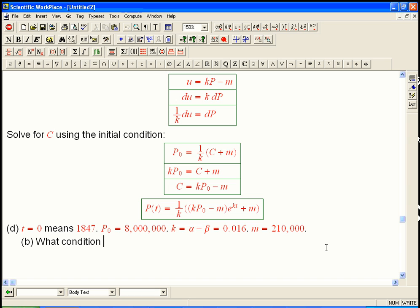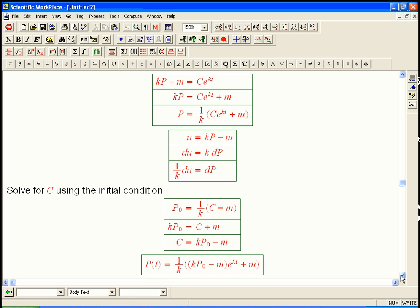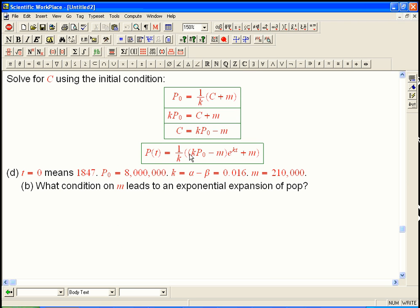b says, what condition on m leads to an exponential expansion of the population? Well, it seems like anything's going to be exponential. It's an exponential function with some dressing on it. Number, number, number. But the key word is expansion. When is this actually going to end up being growth? And there's two ways to answer that, either by looking at the solution or by looking at the differential equation.